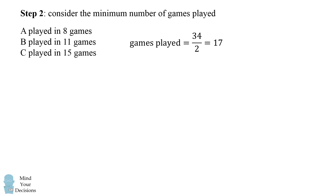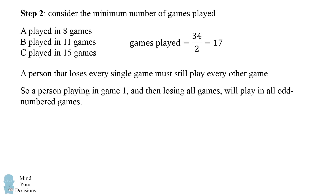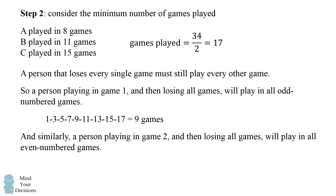Now let's consider the minimum number of games played. A person that loses every single game must still play every other game, because the loser and the resting player rotate with each other. So a person playing in game 1 and then losing all games will play in all odd-numbered games — a total of 9 games. Similarly, a person playing in game 2 and then losing all games will play in all even-numbered games — a total of 8 games.